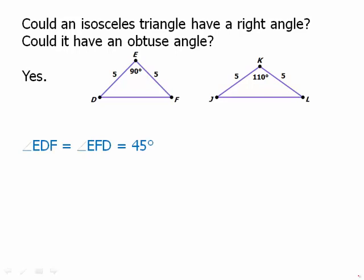In the obtuse triangle, we have 110 degrees, so the other two angles must add up to 70 degrees, meaning each one is 35 degrees.